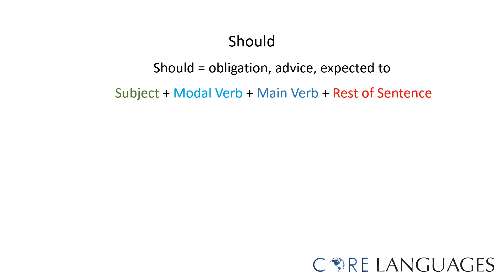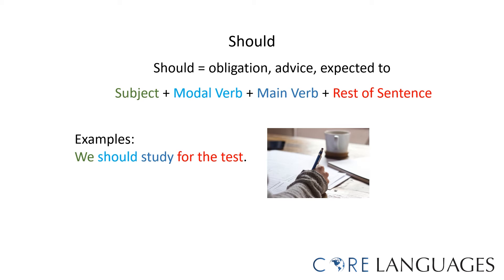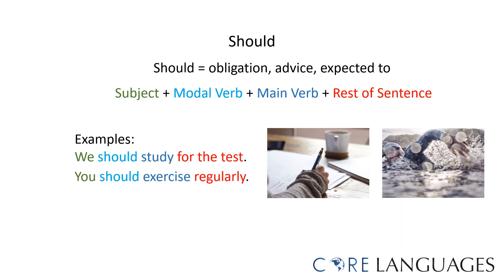The modal verb 'should' is used to express obligation, advice, and to express that someone is expected to do something. The word order is the same: subject, modal verb, main verb in its base form, and the rest of the sentence. For example, we should study for the test. Or, you should exercise regularly. To negate these sentences, we simply add 'not' behind the modal verb: we should not study, or you should not exercise.